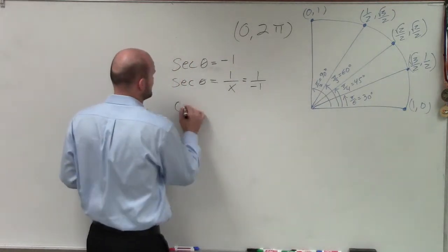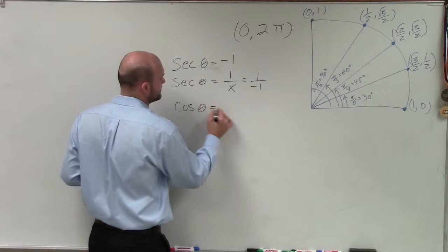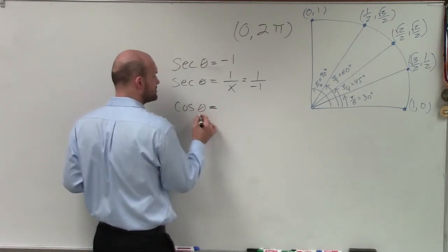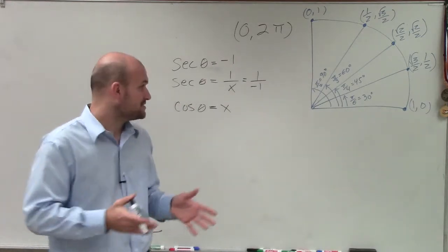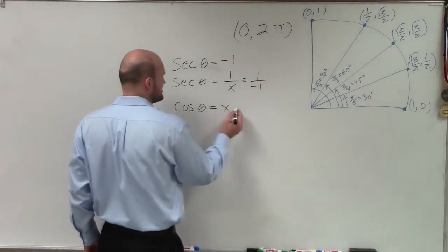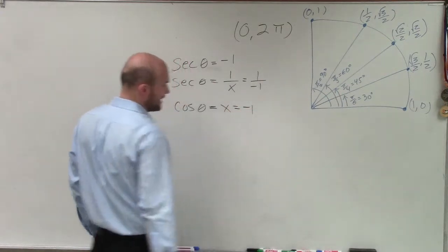And remember, going back into the cosine function, cosine of theta is just going to equal cosine of theta equals x. So therefore, we want to also really determine when cosine of theta is going to equal negative 1.